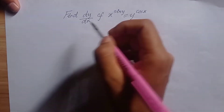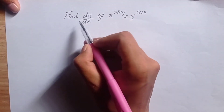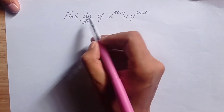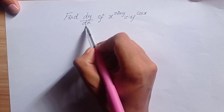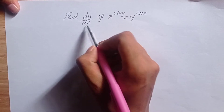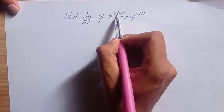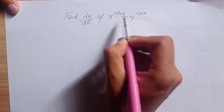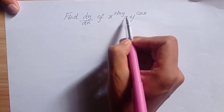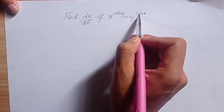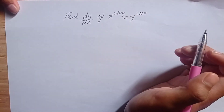So the question is: find the derivative of y with respect to x, given x to the power sin y is equal to y to the power cos x.